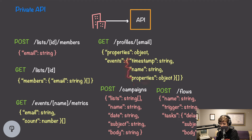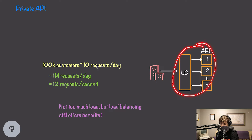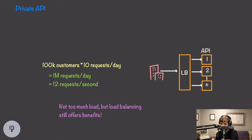The list of events should also include emails being sent and delivered so customers can track those. Customers can also track metrics for a particular event — including an event name and getting back a list of email addresses with how many times that metric occurred. Doing the math, if each customer makes about 10 requests per day, that's only 1 million requests per day or 12 per second. One API node could handle this, but we'll still introduce a load balancer for fault tolerance and to handle spikes, with probably two or three API nodes behind it.